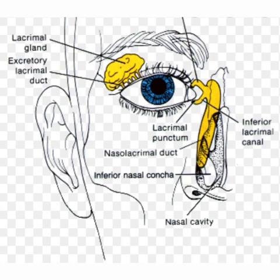The lacrimal sac is closed above and open below, and is continuous with the nasolacrimal duct. The parts of the lacrimal sac are the fundus and the body. The superior part of the lacrimal sac is called the fundus, which is about 3 to 5 mm in length, and the lower part is called the body, which is about 10 mm in length.